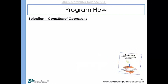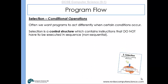Selection is where a program makes a decision—it's a conditional operation. We sometimes want our programs to act differently when certain conditions occur, and selection allows us to do that. It's a control structure with instructions that do not have to be executed in sequence.